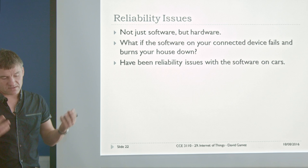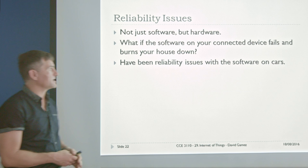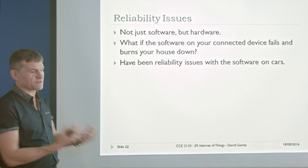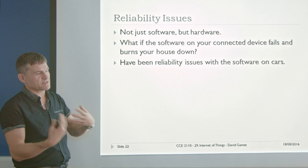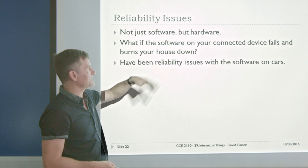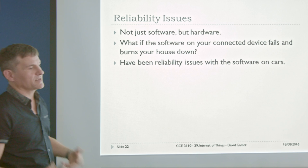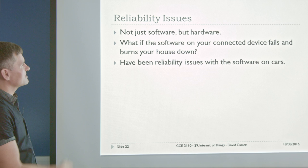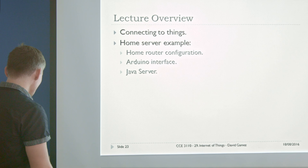On top of that, there are reliability issues. If your car's software fails and you crash, that's a serious error caused by software failure, not just hardware. What if the software on your connected device fails and burns your house down? What if Nest goes crazy and runs your heating into overdrive and kills your pets? There are reliability issues with software in cars — Toyota had weird braking things. There are lots of reliability issues to think about as well as security issues.